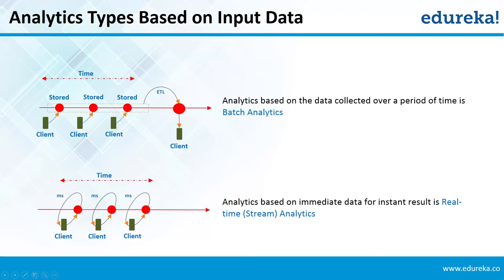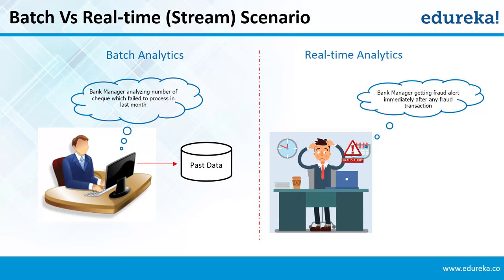For example, there is past data stored in a bank. The bank manager wants to analyze the number of checks which failed to process in the last month — this process of finding the count of failed checks is based on batch analytics. Whereas if a bank manager is getting a fraud alert immediately after a fraud transaction is detected in the system, it is based on real-time analytics.